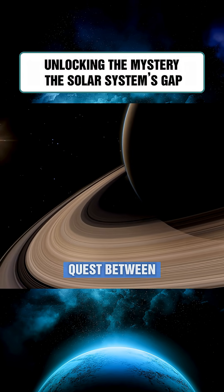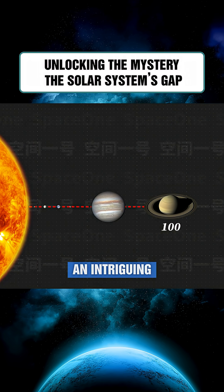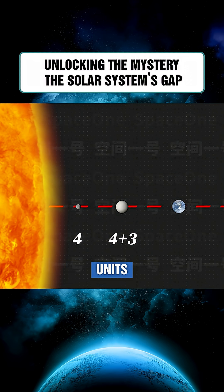The Tideous Bode Law and the Quest Between Mars and Jupiter. Long ago, astronomers noticed an intriguing pattern. If Saturn's distance from the Sun is taken as 100 units, then Mercury is at 4, Venus at 4 plus 3, Earth at 4 plus 6, and Mars at 4 plus 12.